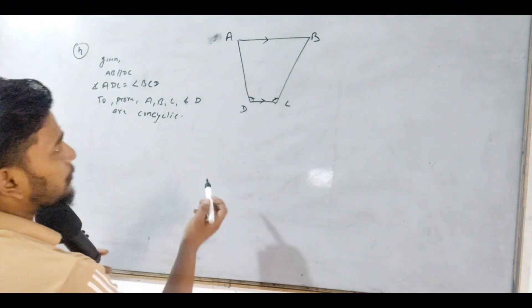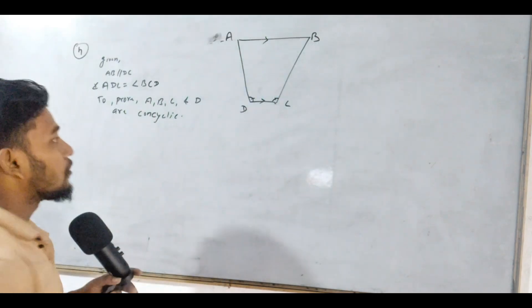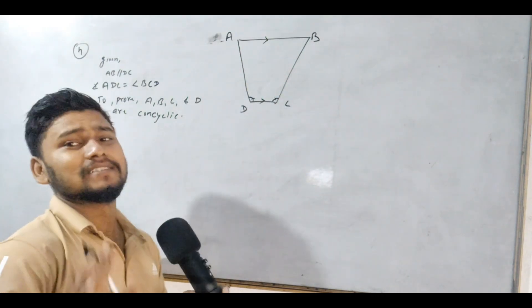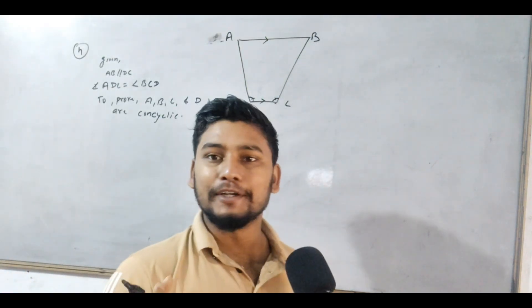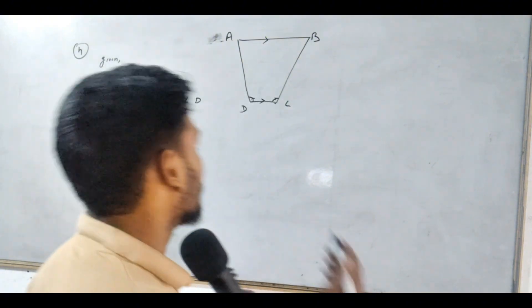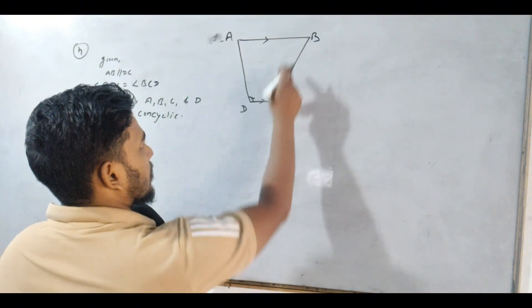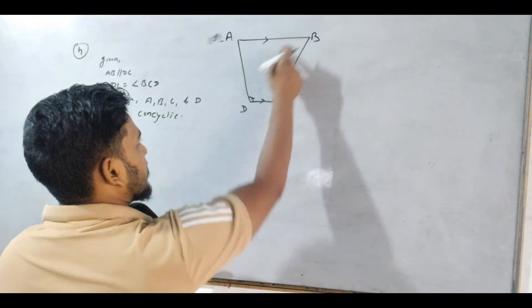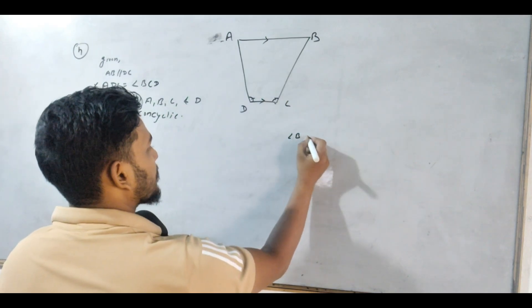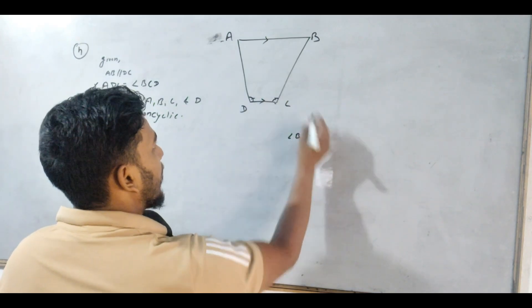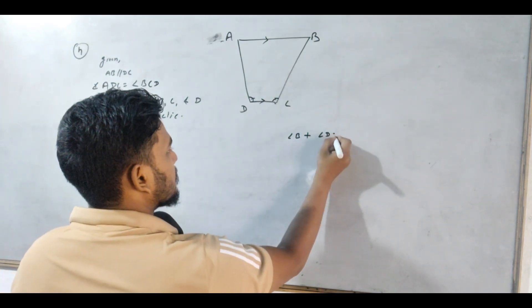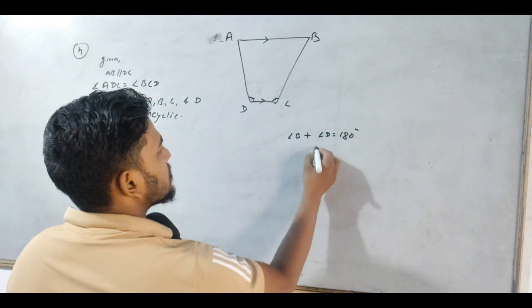We have to prove that ABCD is cyclic — this means ABCD is a cyclic quadrilateral. You have to prove that ABCD is a cyclic quadrilateral. The cyclic quadrilateral has a property: you have to prove that the opposite interior angle is 180 degrees. It means that it is supplementary. Angle B plus angle D is equal to 180 degrees.